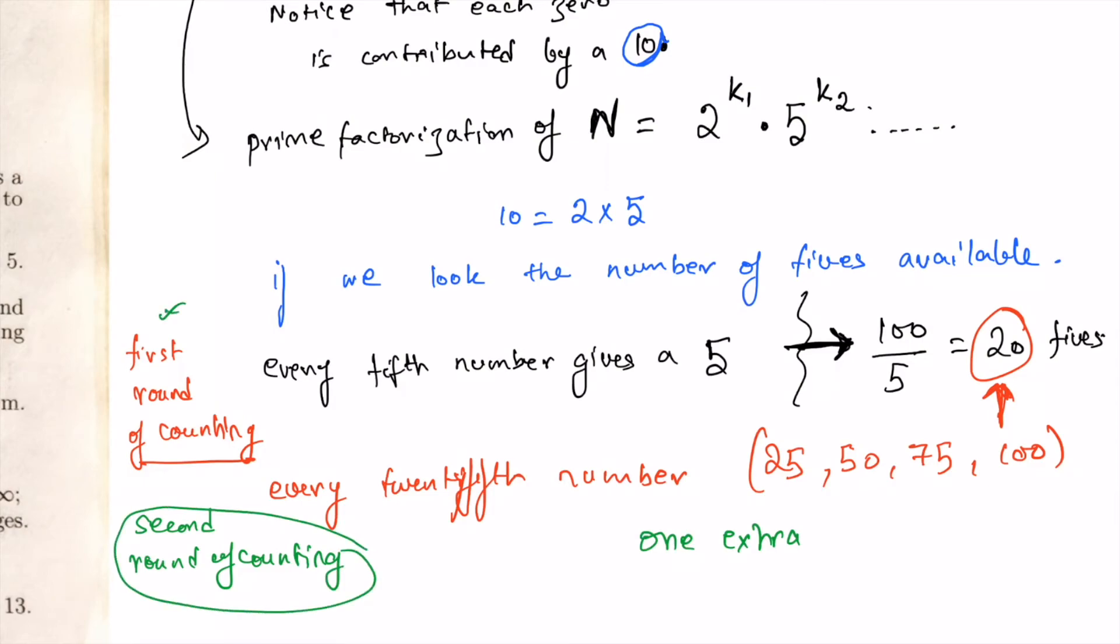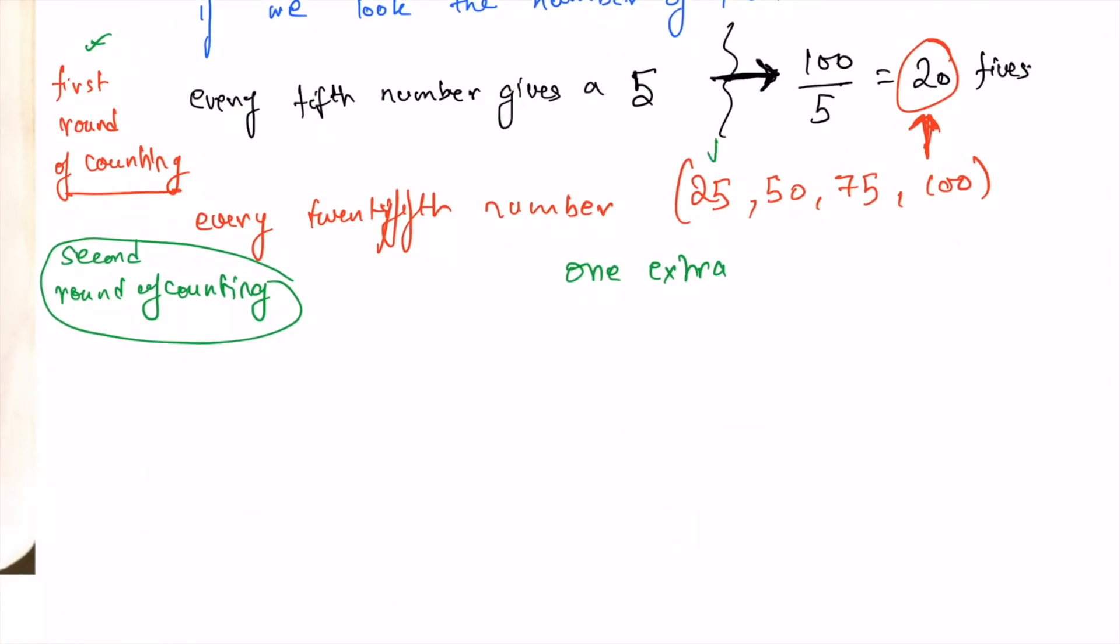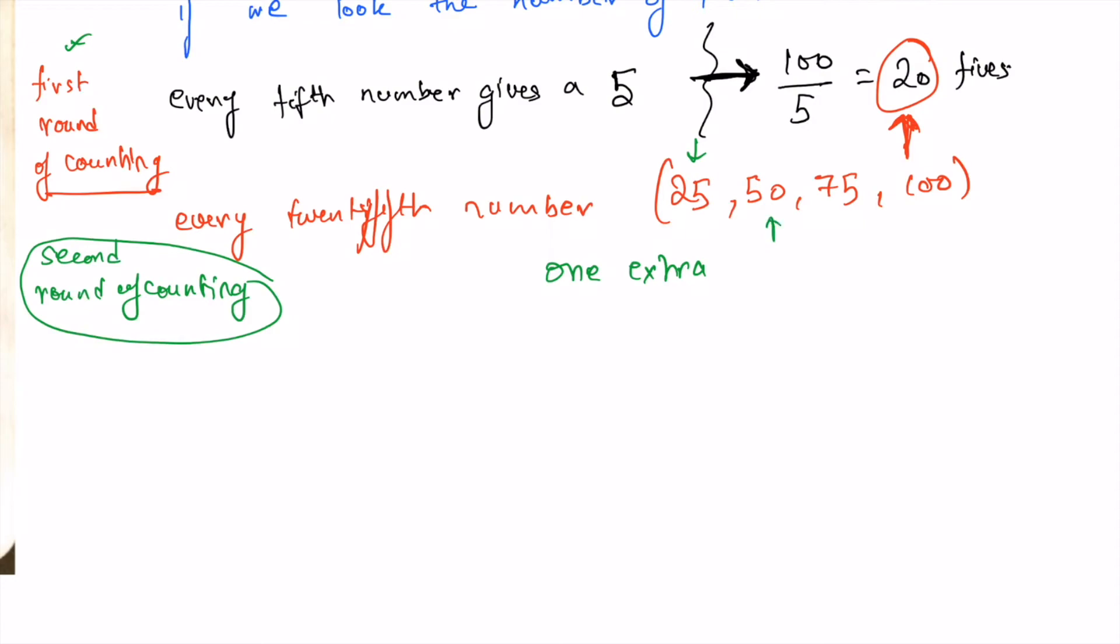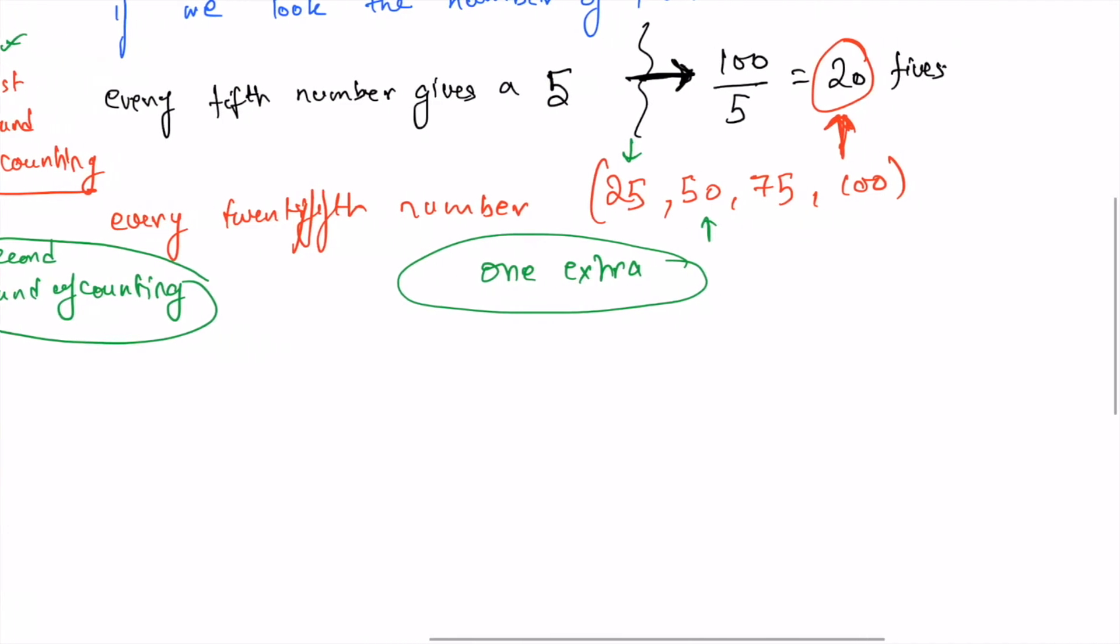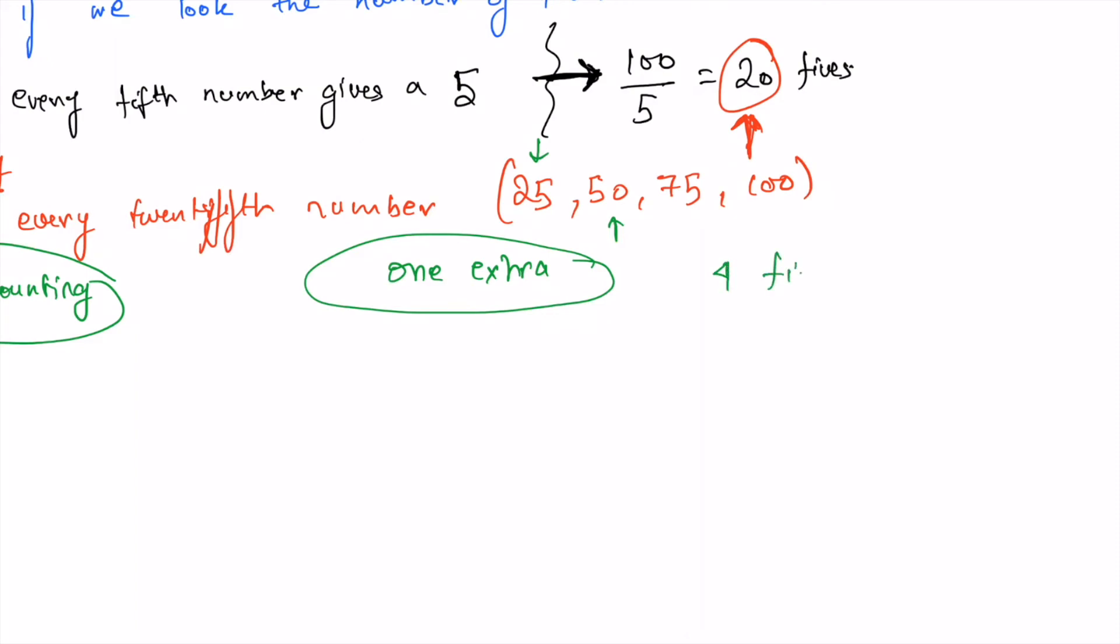We have already counted one of the fives available in fifty, in the prime factorization of fifty, and so on. So in the second round we count one extra, the extra five that is there. So there are four of them, of course, so four fives. So in total we have twenty plus four, twenty-four fives.